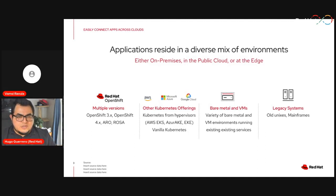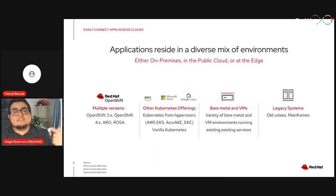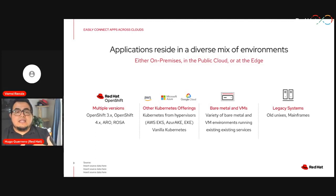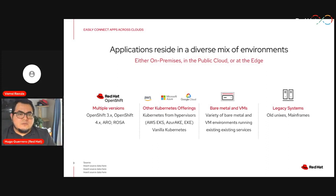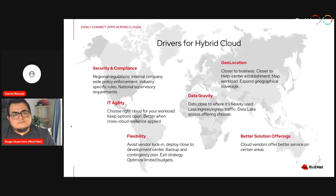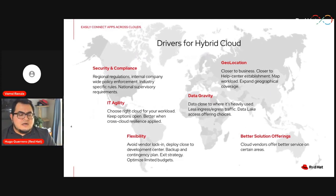Perhaps you're still using legacy systems, mainframes, or virtualization and bare metal — every single VM you're using is different. Or you've started using Kubernetes offerings that differ between providers, or Red Hat OpenShift with multiple versions and clusters. You might be on OpenShift 3, moving to OpenShift 4, or using managed services like ARO or ROSA on Azure and Red Hat OpenShift.